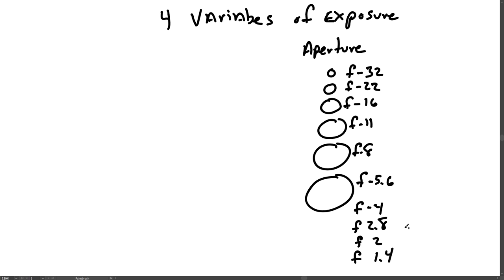You can see that the smaller the number of the f-stop, the larger the aperture, and the larger the f-number — f32 — the smaller the aperture. These you should commit to memory.